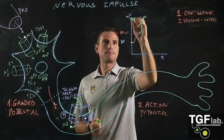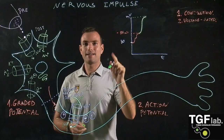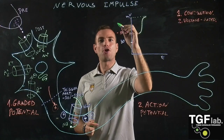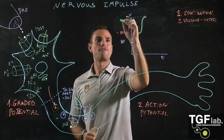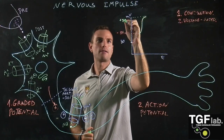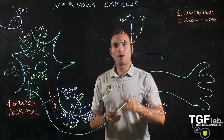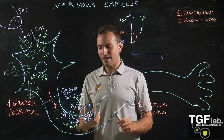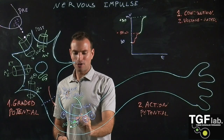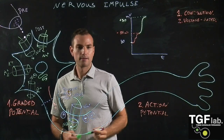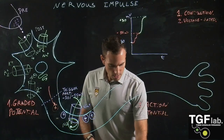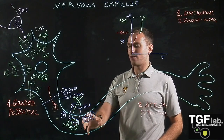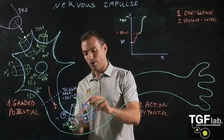The intensity of the depolarization event is only one — it is not tunable or variable like in the graded potential. It is going to be a maximum intensity of +30 millivolts. When this maximum intensity of +30 millivolts of the membrane potential is achieved, the channel is going to close.